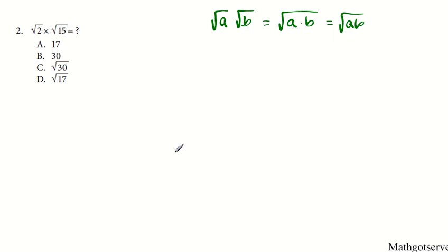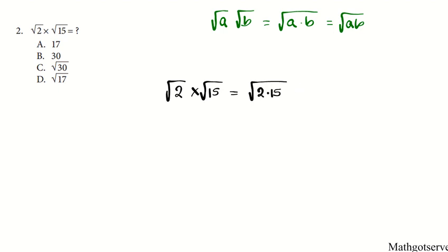In this case, we have the square root of 2 times the square root of 15. The radicands are 2 and 15. So the product is simply going to be the square root of 2 times 15, and that becomes the square root of 30. The answer is option C.